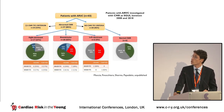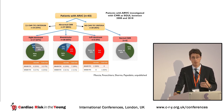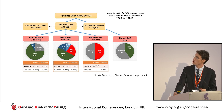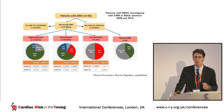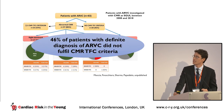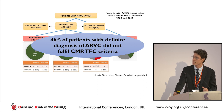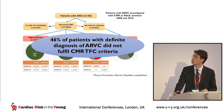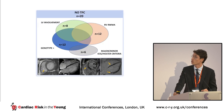ARVC appears indeed as a biventricular disease: we had biventricular involvement or left-dominant disease in more than 50% of patients with an abnormal cardiac MRI. Most importantly, 46% of patients with a definitive diagnosis of ARVC using Task Force Criteria did not fulfill the cardiac MRI Task Force Criteria.